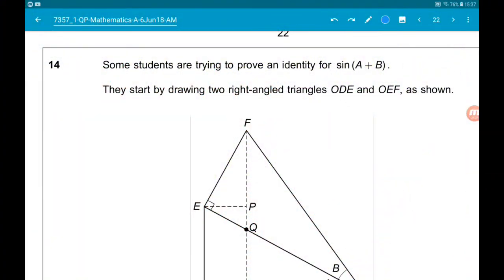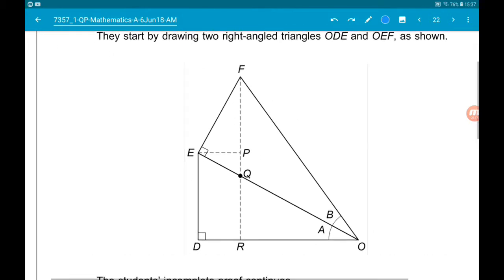Okay, question 14. Some students are trying to prove an identity for sin of A plus B. They start by drawing two right triangles, O D E and O E F as shown.